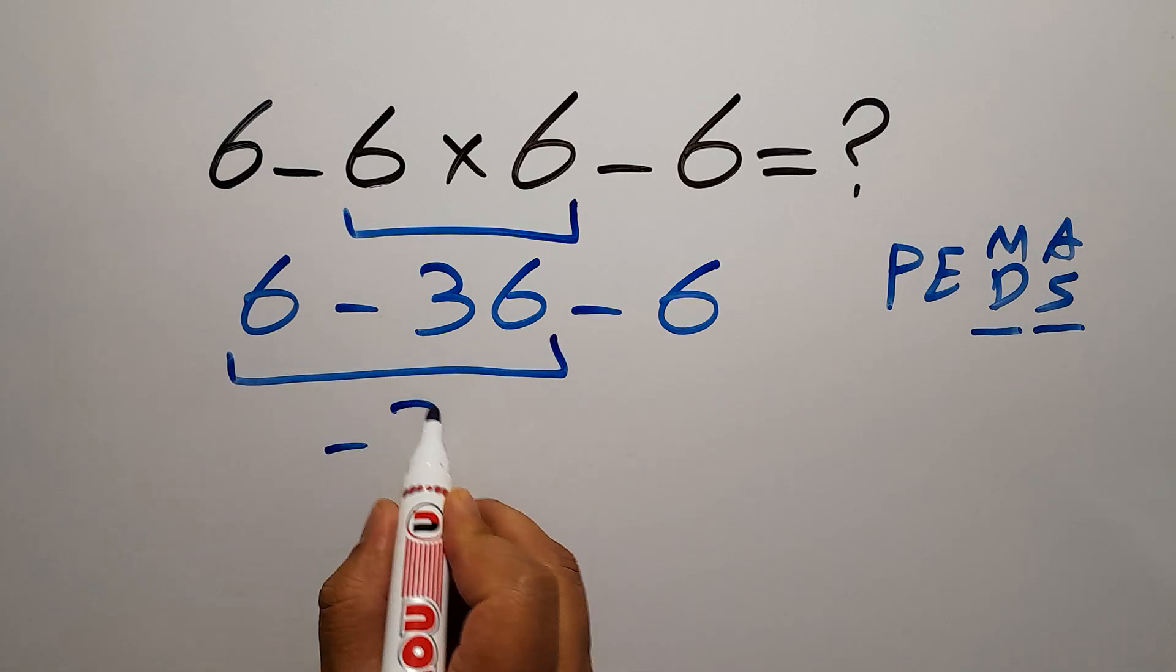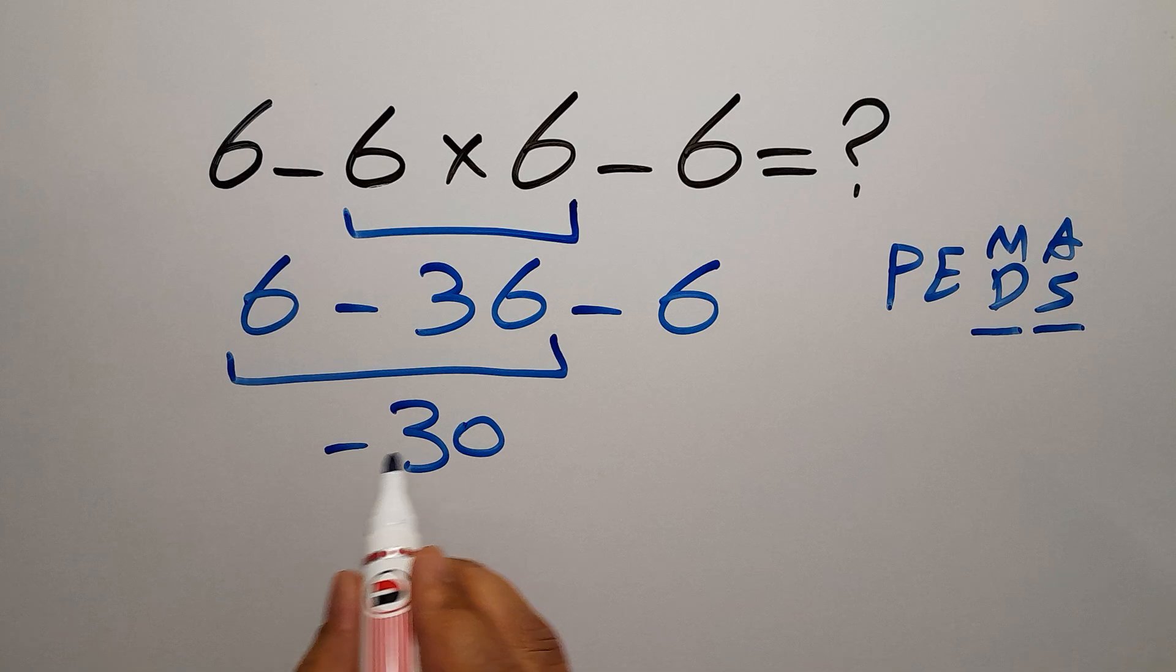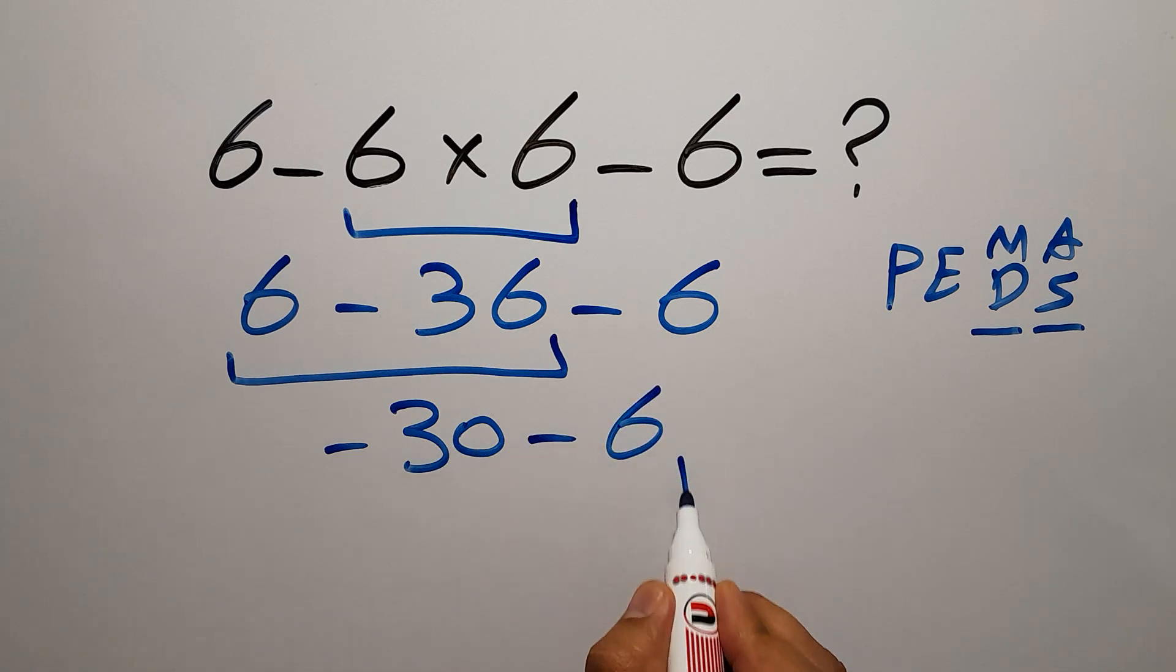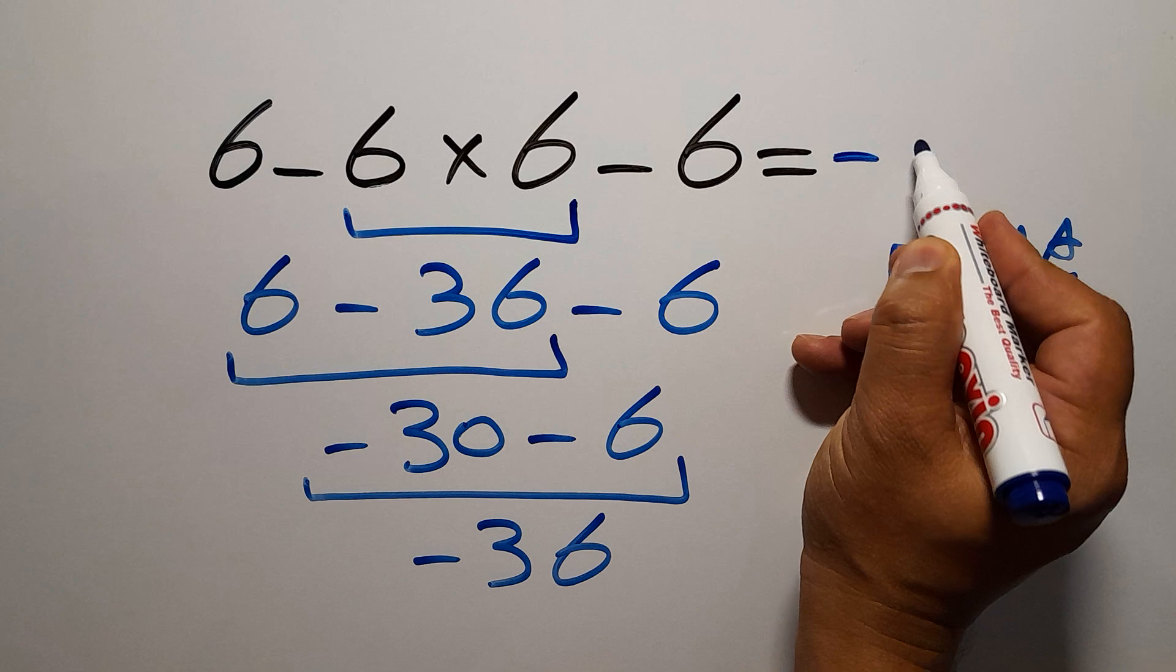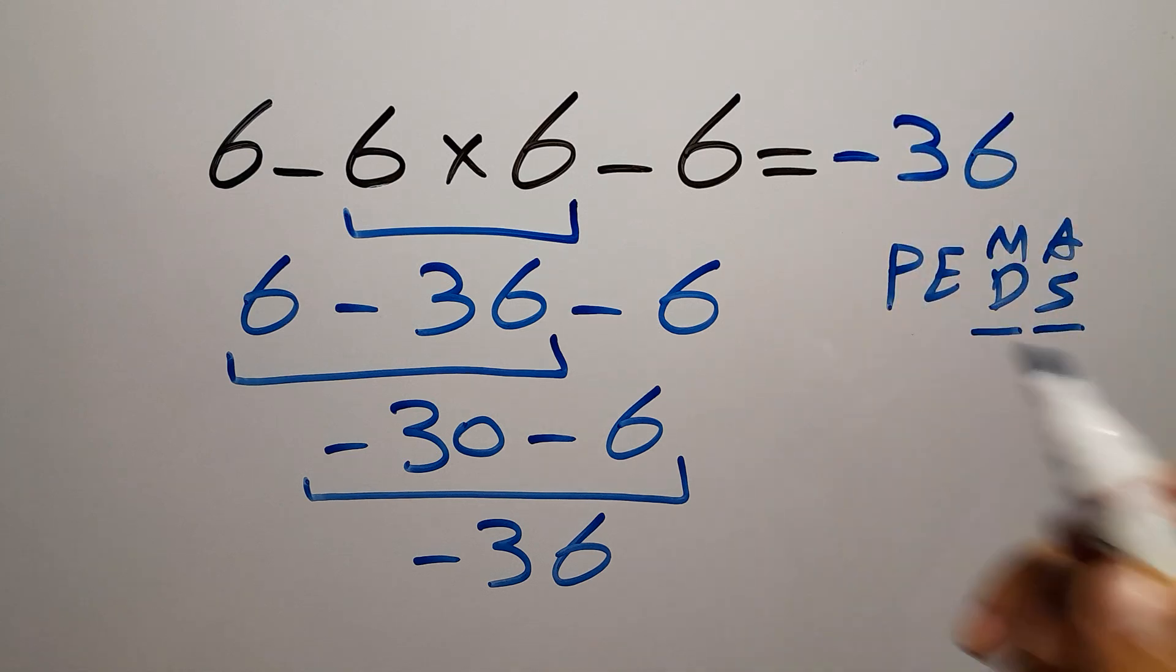So negative 30 minus 6, and this is equal to negative 36. Therefore, our final answer to this problem is negative 36. The correct answer is negative 36.